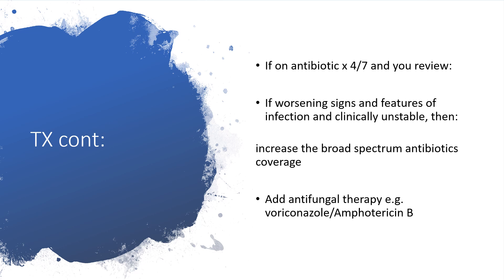If on antibiotics for seven days and the situation is worsening — with signs and features of infection or clinical instability — we will widen the antibiotic spectrum coverage and cover more ground. On top of that, we add antifungal therapy such as voriconazole or amphotericin B for broader coverage. Remember, procalcitonin will help again — it may turn out to be viral.